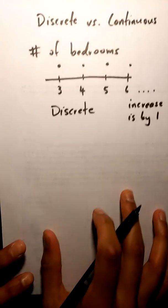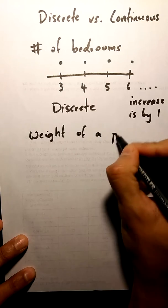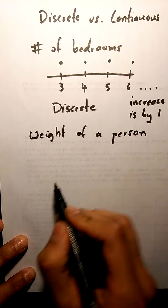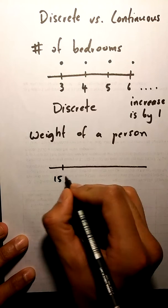If we're talking about another example, say the weight of a person. Again pick a random weight, 150 for example.